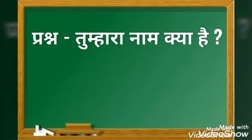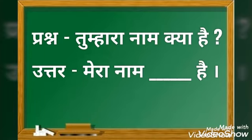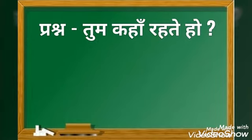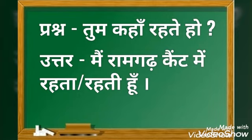प्रश्न: तुम्हारा नाम क्या है? उत्तर: मीरा नाम — यहाँ अपना नाम लिखें। प्रश्न: तुम कहाँ रहते हो? उत्तर: मैं रामगर केंट में रहता हूँ। अगर लड़की हो तो रहती हूँ।